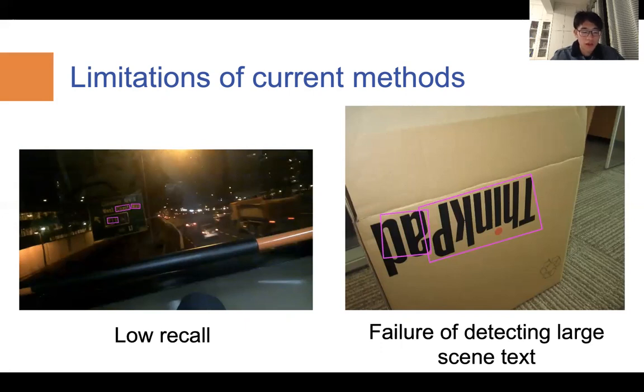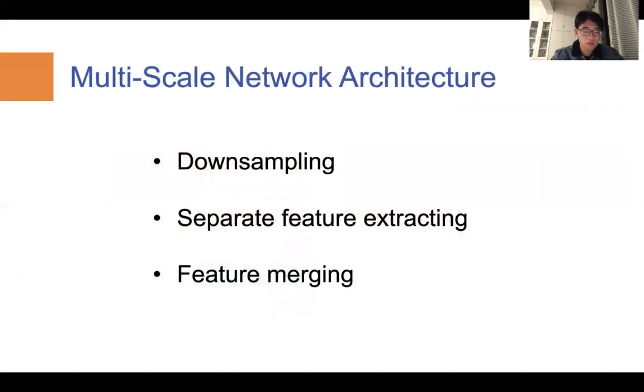In order to tackle with these two problems, I proposed this revised model. First, I introduce multiscale network architecture, which consists of three steps: downsampling, separate feature extracting, and feature merging.